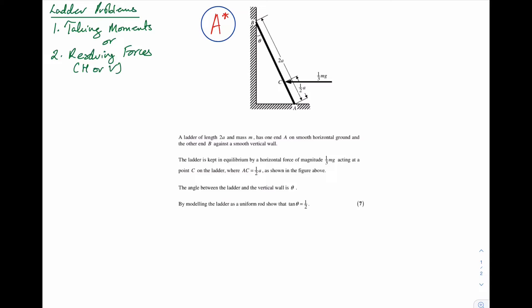I'm going to label all the forces acting on the ladder. I've got a normal reaction at point B which is perpendicular to the vertical wall, a normal reaction at point A which is perpendicular to the horizontal ground. The ladder is modelled as a uniform rod, so the weight of the ladder acts at the centre — it is mg. Hence this part is A and this part is A.